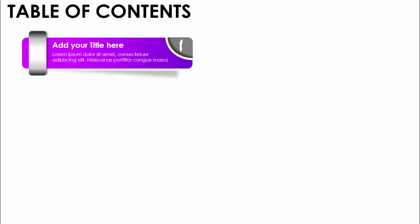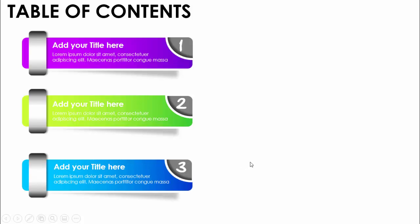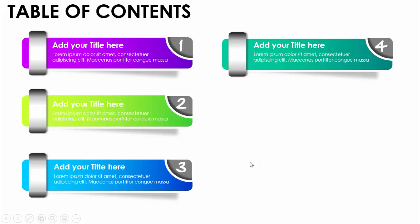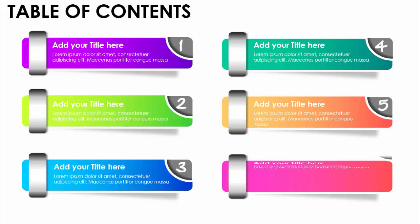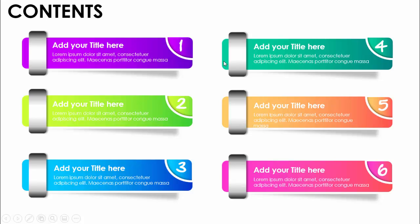In today's tutorial I'm going to show you how to create a table of contents in PowerPoint. When I click it will show the first table of content — you can add your title and detail text with a shadow effect and metallic look, then add the slide number. Clicking again shows the second option with a different color. There are six table of content options total. I've also created one slide without animation, using the same color as the background.